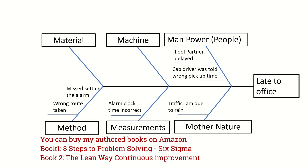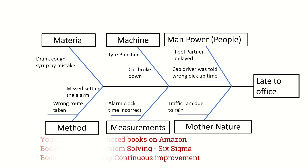A pool partner delay or a cab driver being told the wrong pickup time falls under manpower. A tire puncture or a car breakdown falls under machine. Under material, somebody drank cough syrup by mistake and overslept, which could be a material problem. This is how you can identify the root causes of a particular problem.